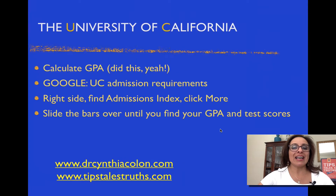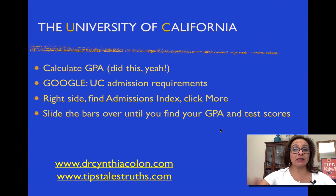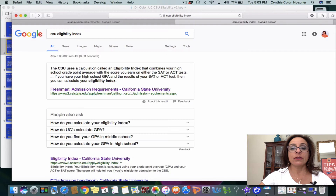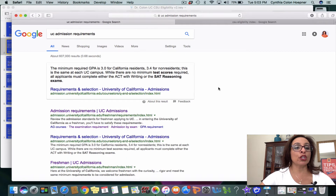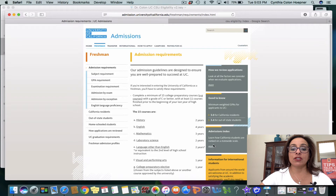For the University of California, you've already calculated your GPA. Now you're going to Google 'UC admission requirements' and find the admission index. I'll show you how. I literally Googled UC admission requirements, clicked on 'admission requirements,' and you can see where it says 'admission index.'